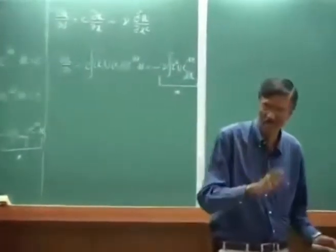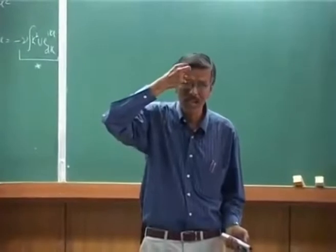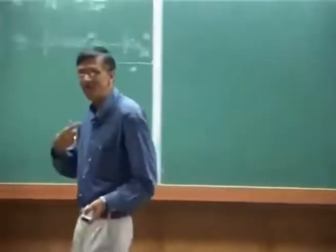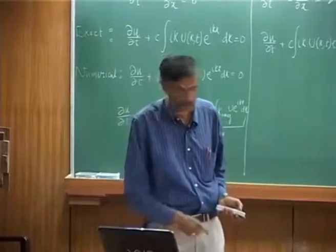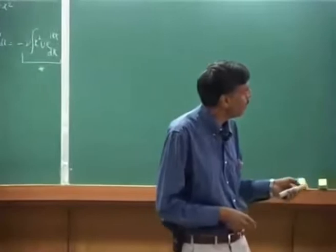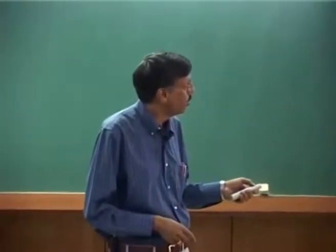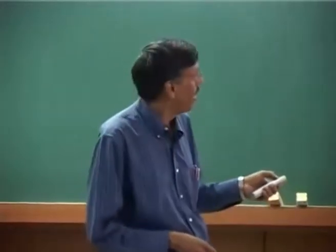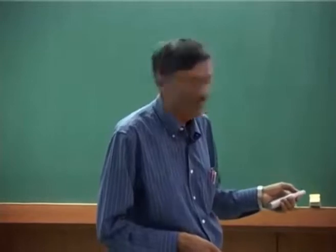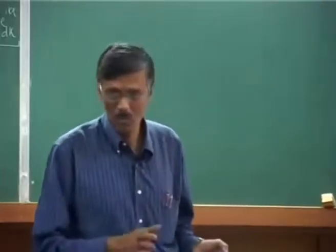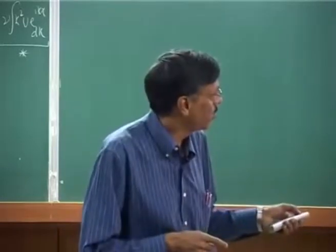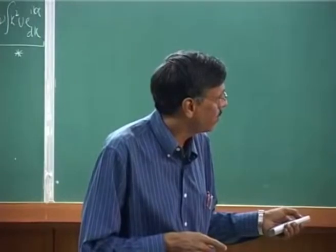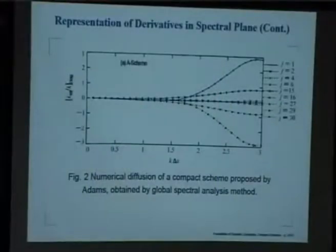If k-imaginary is negative, that is the dissipative effect. If k-imaginary is positive, you would have an anti-diffusive effect. In this scheme, for points 1, 2, and 4, the imaginary part of k-equivalent is positive. In a numerical exercise, all the way up to the sixth point is marginally unstable — slightly positive. So for all the first six points, you would see numerical instability.